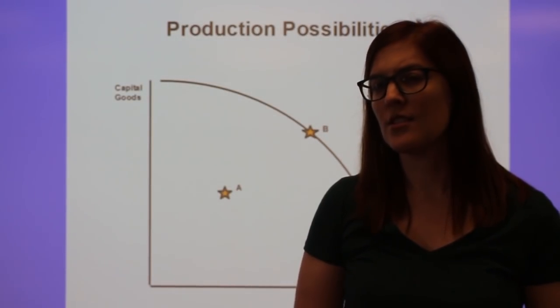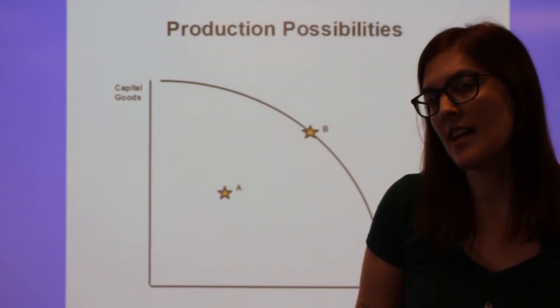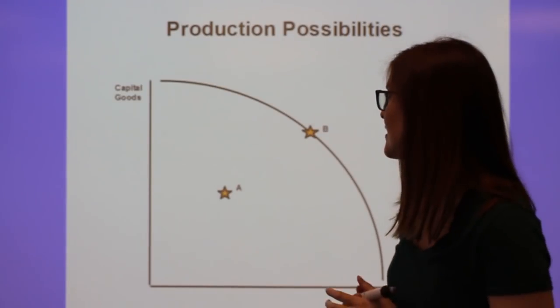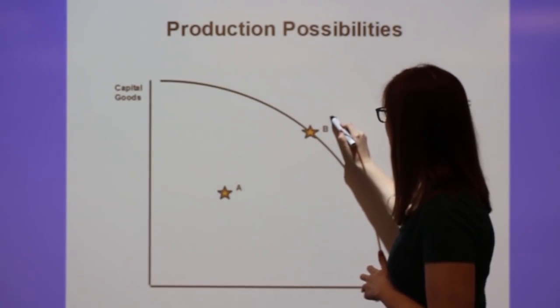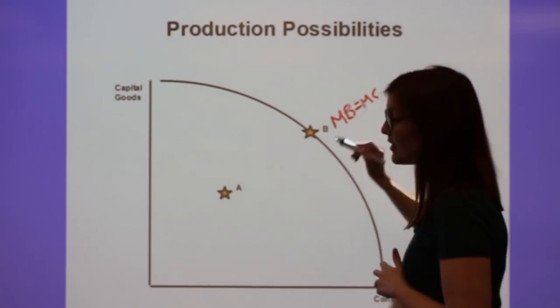Allocative efficiency just describes one point, the exact middle point. Let's say B on this is the exact middle point. So this represents giving up an equal amount of each good or where the marginal benefits equal the marginal costs of each good.